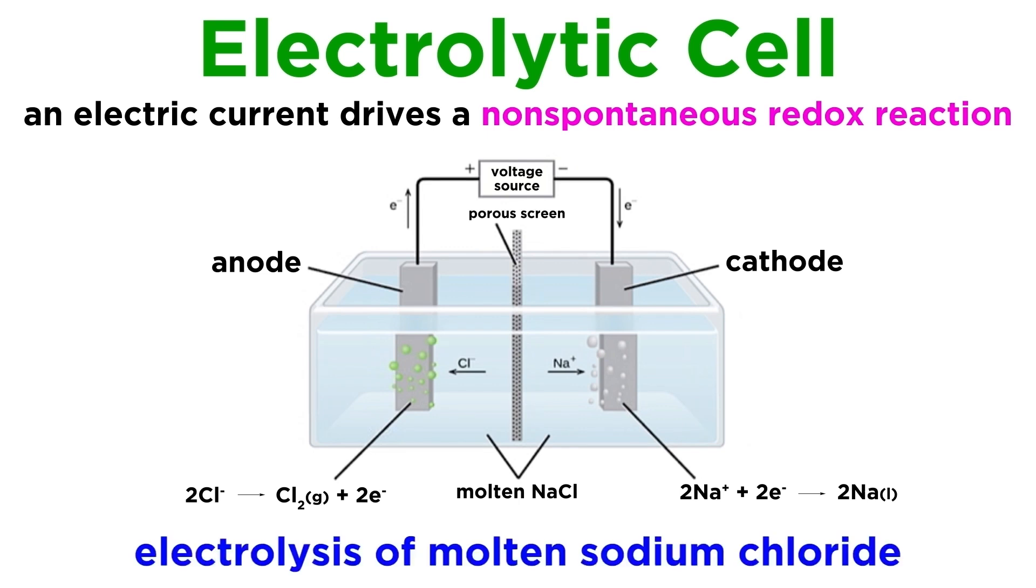First, let's examine the electrolysis of molten sodium chloride. Here, electrons from the current go and reduce sodium ions in solution, which then deposit onto the cathode. Chloride ions then oxidize as they deposit onto the anode.